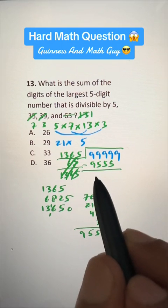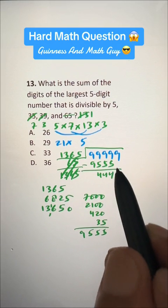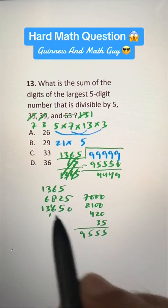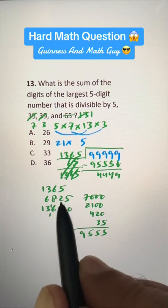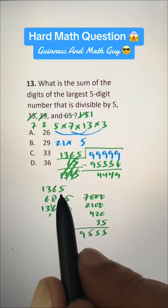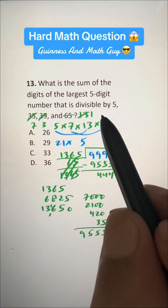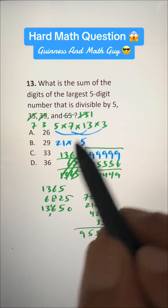and subtract it, we have 444 here, we bring down this 9, and now 4449 is less than 6825, but bigger than 1365. So, let's check 3,